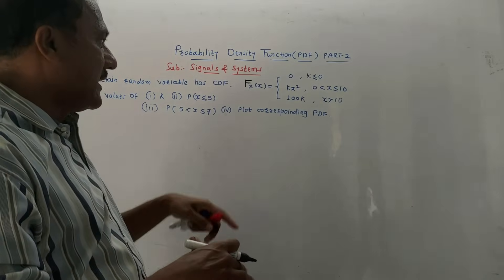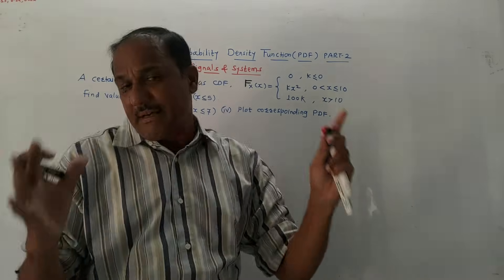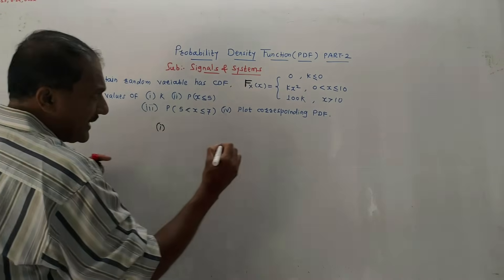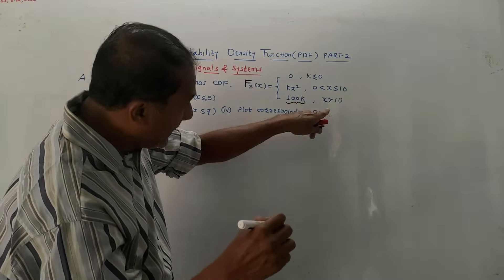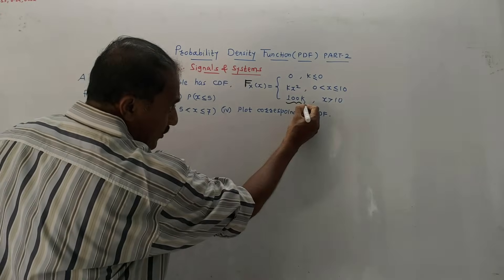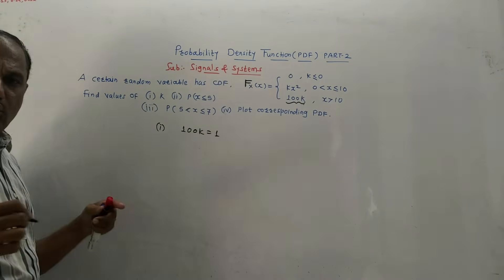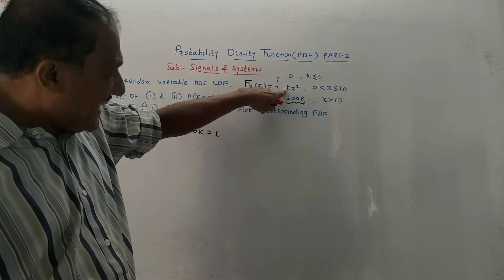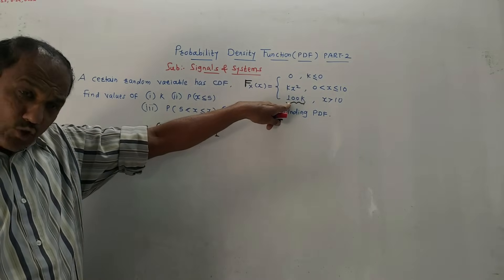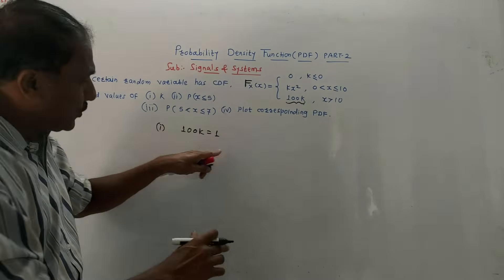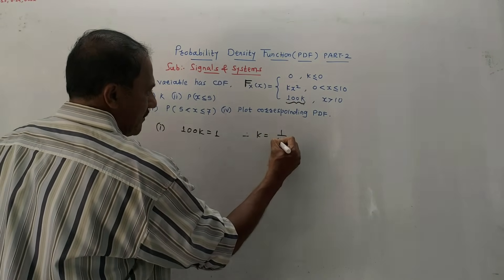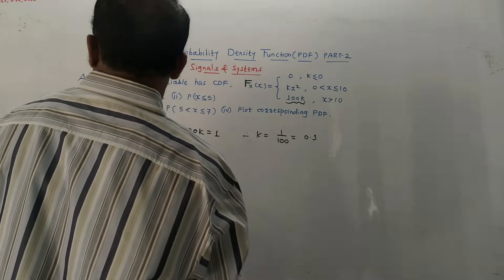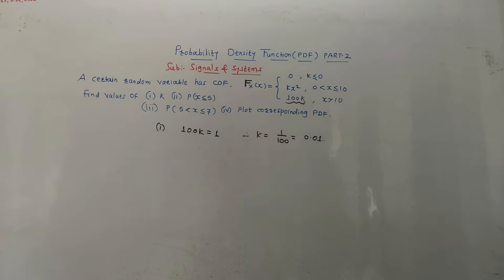To calculate K, always equate the final constant value of the CDF to 1, because the final value of CDF is always 1. The last term is 100K, so equate 100K equals to 1. Therefore K equals 1/100, which is 0.01. This is the value of constant K.